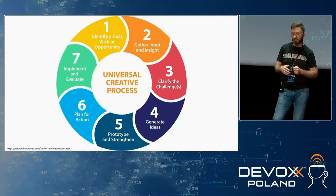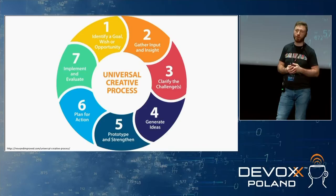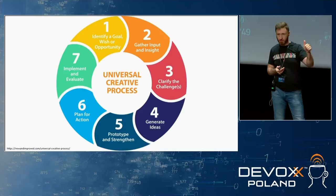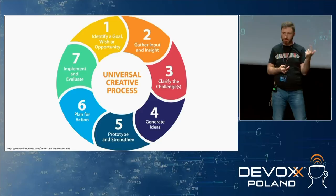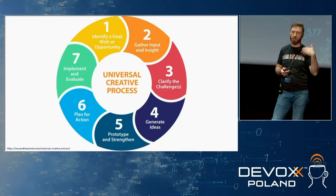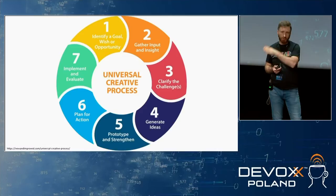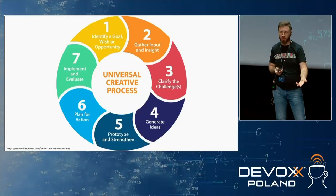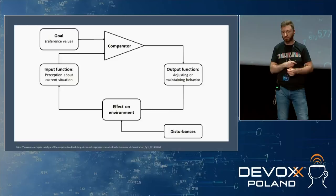Here is a simple model of how we create things. Obviously there are many different processes described, but the main idea is the same. You need to have a goal or problem to solve. You gather data and input about the problem. The third step is to clarify the challenges. The fourth is to generate ideas — that's the aspect of innovation. Then prototyping when you have ideas, planning for implementation, and finally evaluation: does it work or not?